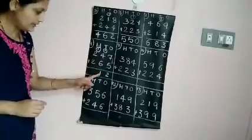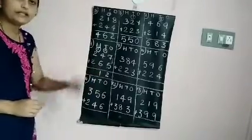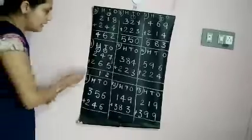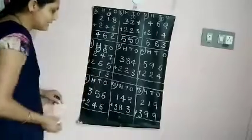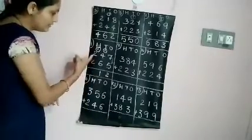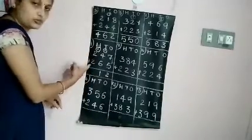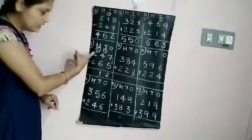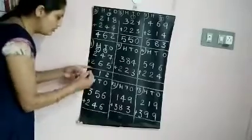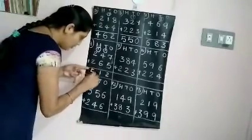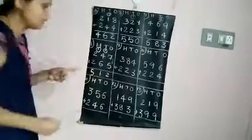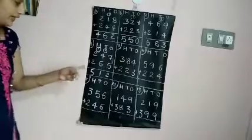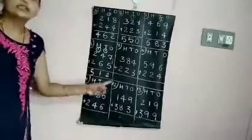10 you have written in the tens column, 100 you have taken to the hundreds column. Now add the hundreds: 1 plus 2 plus 2. 1 plus 2 is 3, 3 plus 2 is 5. So, 512 is the answer.